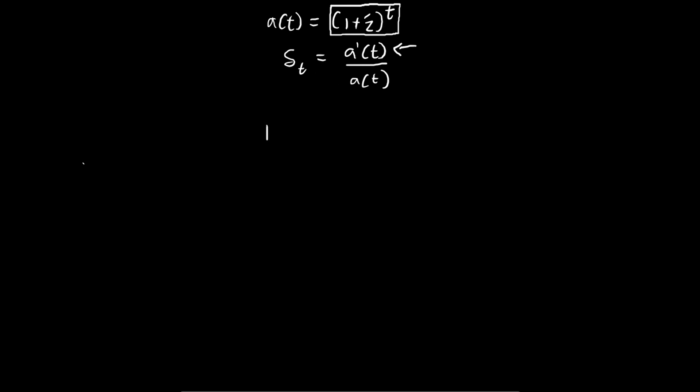Remember we take the natural logarithm of both sides, because otherwise it's quite impossible to just differentiate this term. So the natural log of 1 plus i to the power of t. Recall this is a logarithm, so we can take the t away from here and put it down here.